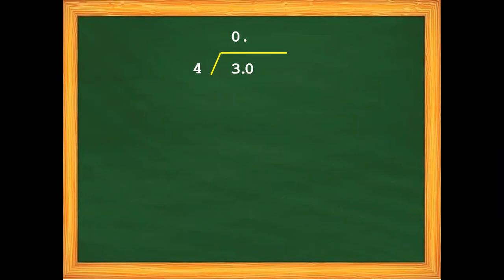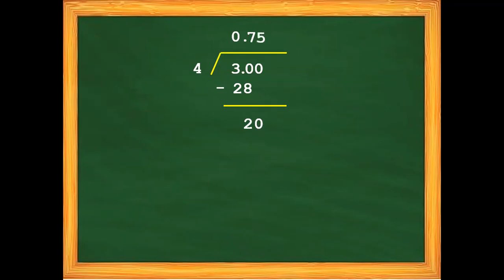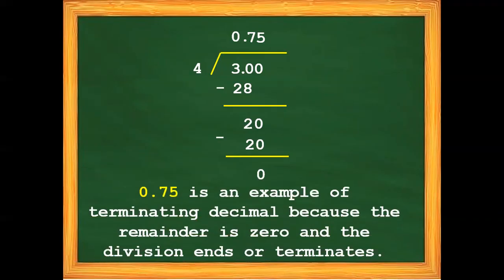30 divided by 4 is 7. 7 times 4 is 28. 30 minus 28 is 2, so we add another 0 and bring it down. 20 divided by 4 is 5. 5 times 4 is 20. 20 minus 20 is 0. So 0.75 (75 hundredths) is an example of a terminating decimal because the remainder is 0 and the division ends or terminates.